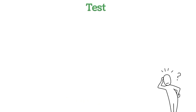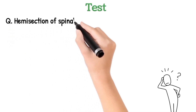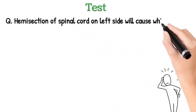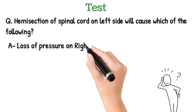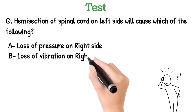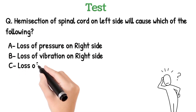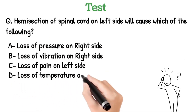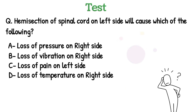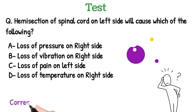Second question: hemisection of the spinal cord on the left side will cause which of the following? Option A — loss of pressure on the right side; option B — loss of vibration on the right side; option C — loss of pain on the left side; option D — loss of temperature on the right side. If you concentrate on the options you will find the correct answer. The correct answer to this question is option D.